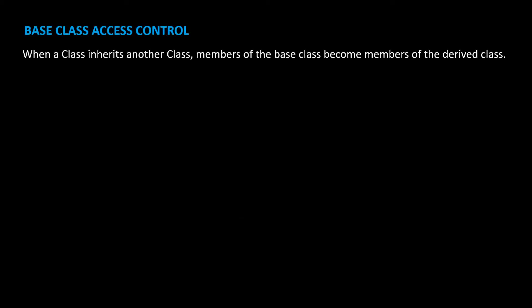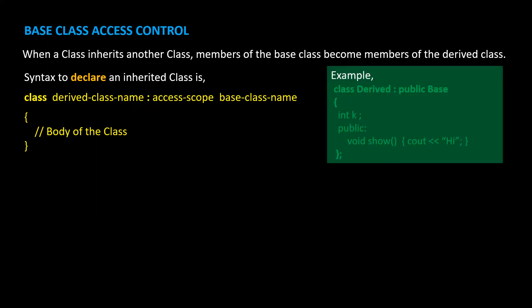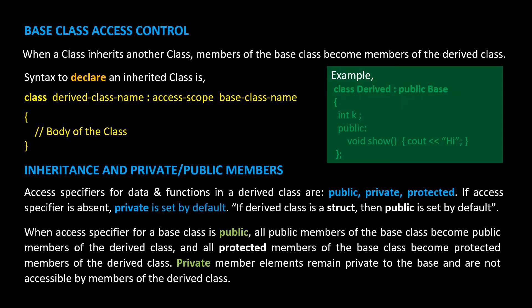Base class access control: when a class inherits another class, members of the base class become members of the derived class. The syntax to declare an inherited class is given here. This is an example where we create a class named derived which inherits properties from another class named base. The access specifiers for data and functions in a derived class are public, private, and protected. If the access specifier is absent, private is set by default. If the derived class is a struct, then public is set by default. When the access specifier for a base class is public, all public members of the base class become public members of the derived class, and all protected members of the base class become protected members of the derived class. Private member elements remain private to the base class and are not accessible by members of the derived class.